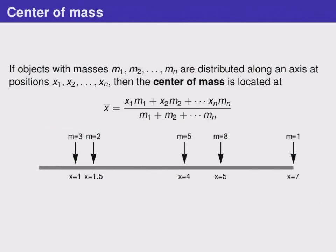This leads to the idea of center of mass. If you have several objects with masses that we'll call m1, m2, and so on, and they're distributed along a one-dimensional object, an axis such as a rod or piece of wire, at some positions that we'll call x1, x2, and so on,